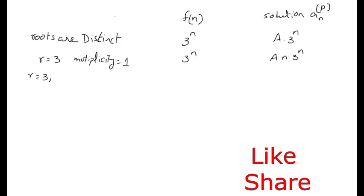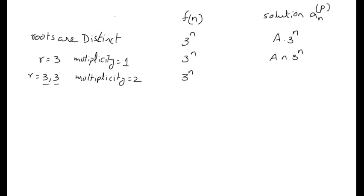Suppose there are two roots that are all the same, so the multiplicity is 2, and F(n) = 3^n. Here the roots are 3, 3 and F(n) = 3^n, so the multiplicity is 2. For this case, the particular solution is A·n²·3^n.